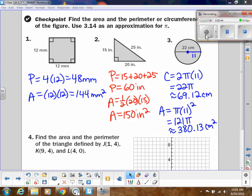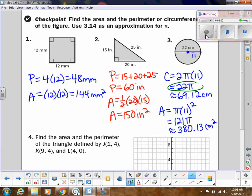And then even though the directions say use 3.14 as an approximation for pi, we will never use 3.14. There is actually a pi button on your calculator. And if you need help finding that, please ask about that in class. But we will always use pi.